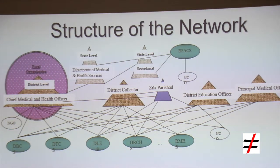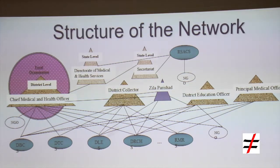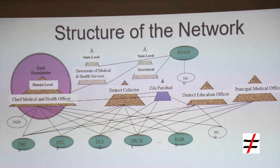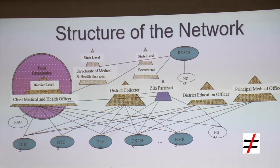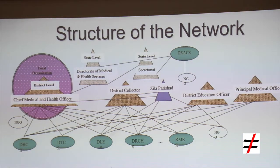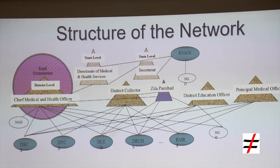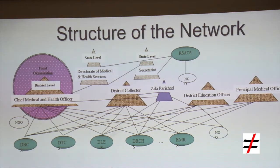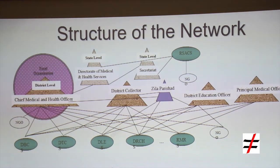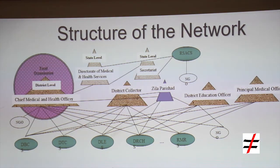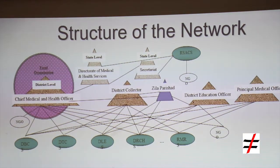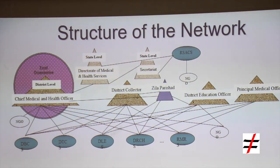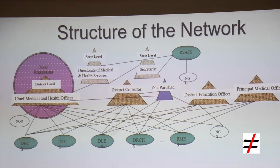I had done this study in Rajasthan in a particular district. If you look at the structure of the network, I have conceptualised that the public-private partnerships in a particular district emerge in the form of a network, which is held together by the flow of information and resources. The chief medical and health officer of the particular district is the local organisation, and the linkages of the CMHO with the different service providers are mapped through resource and information flow study.